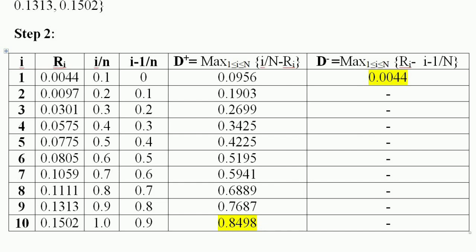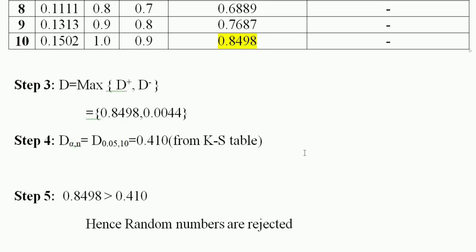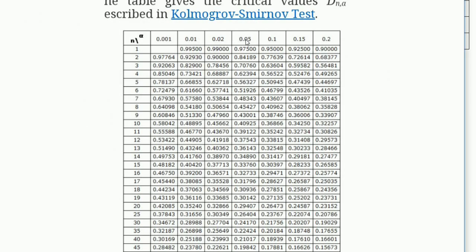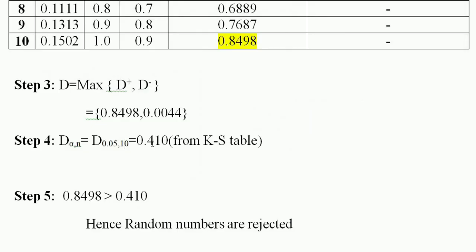So D+ = 0.8498 and D− = 0.0044. Now using the Kolmogorov-Smirnov table, we look up D(alpha, n) with alpha = 0.05 and n = 10. From the table, we get the critical value of approximately 0.409.